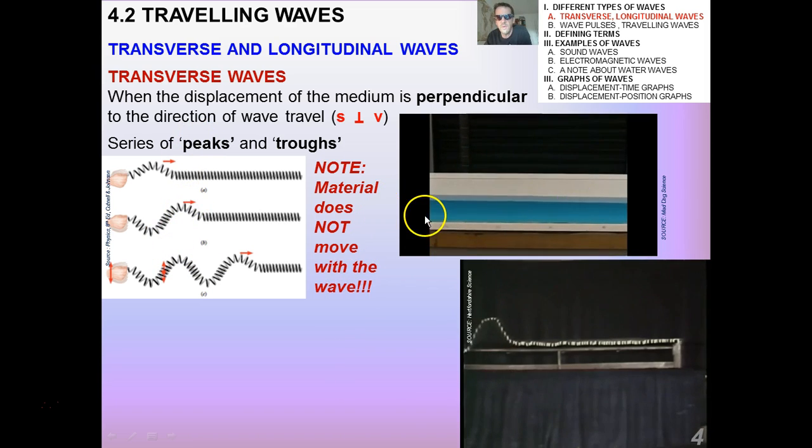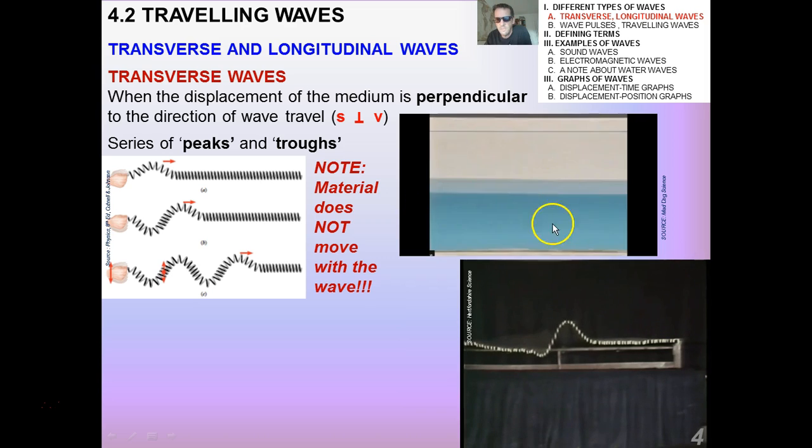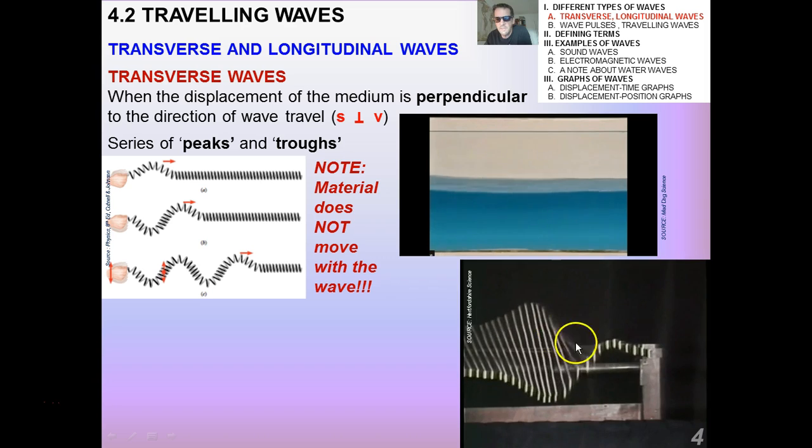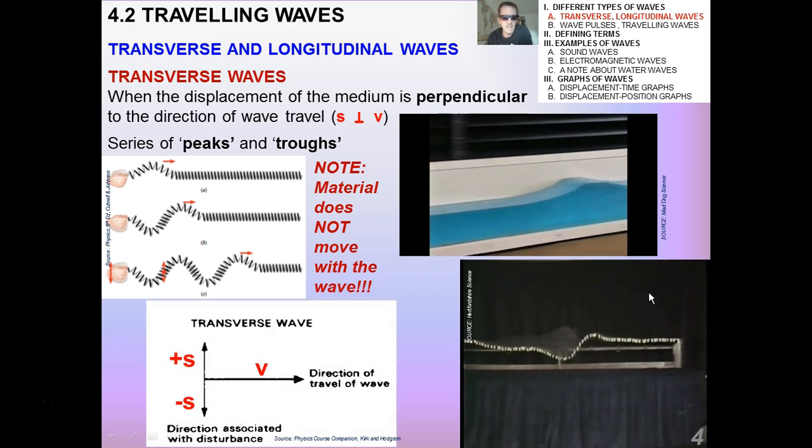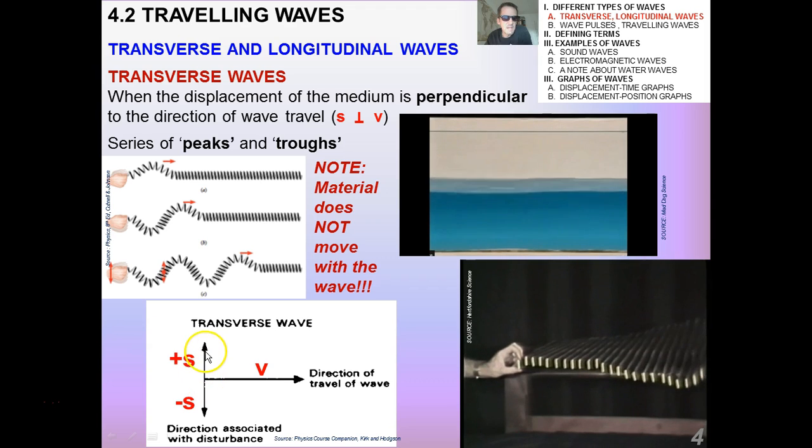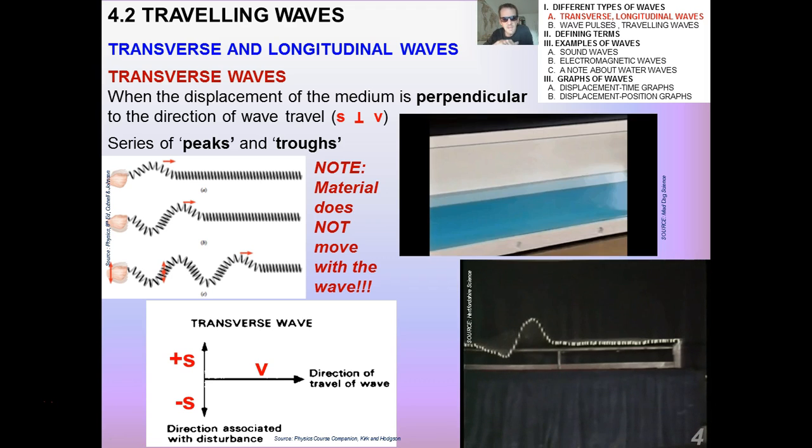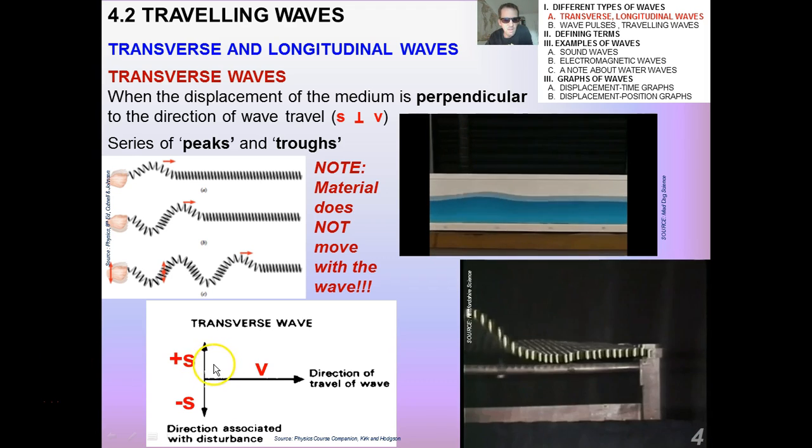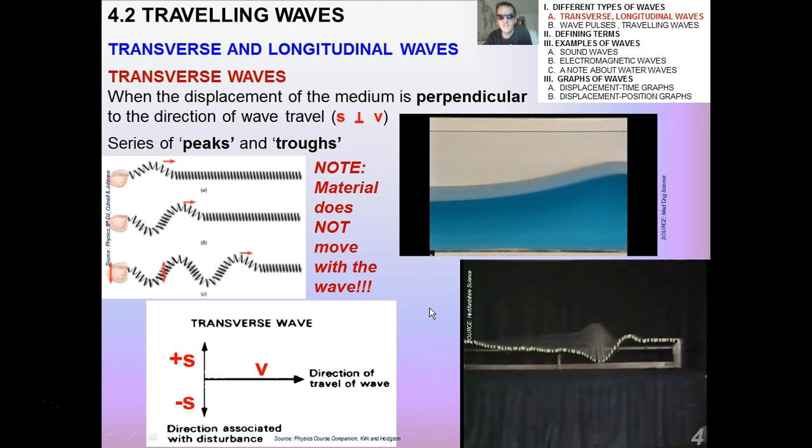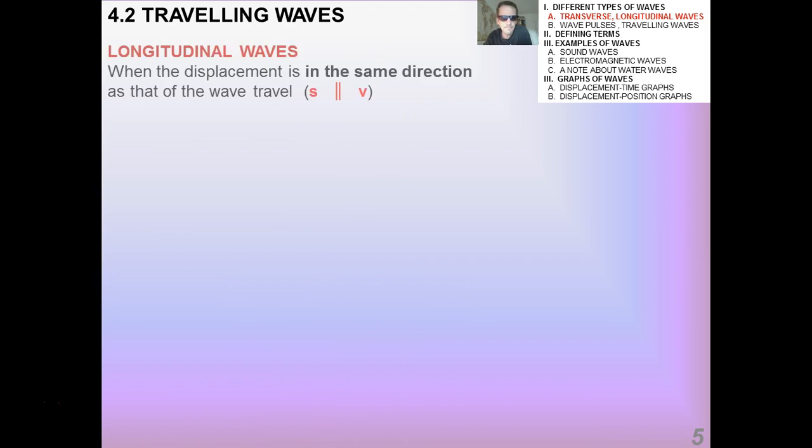The material does not move with the wave. So here's a water wave, which we simplify as being a transverse wave. We saw this in the last slide, this apparatus. Beautiful transverse wave. We have an oscillation between positive displacement, which is up, and negative displacement, which is down. And the velocity of the wave is always at right angles to the direction of the displacement. That is the defining characteristic of a transverse wave.